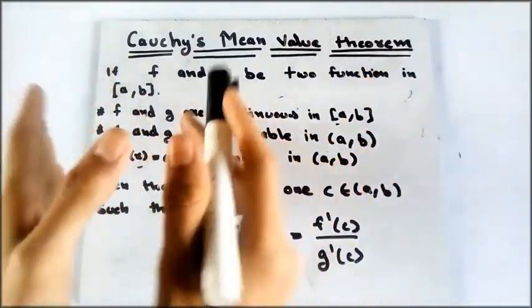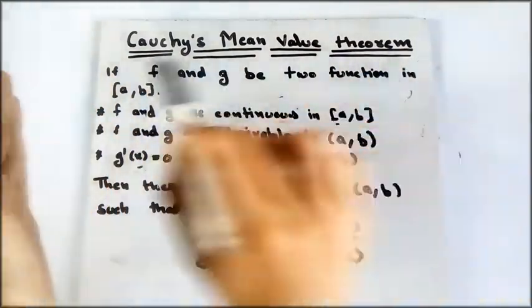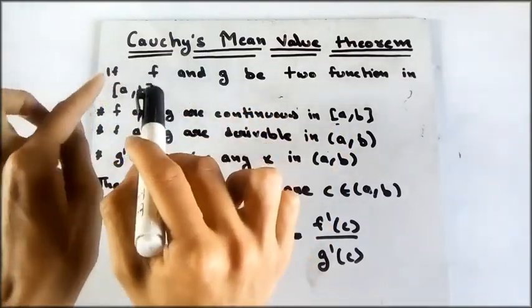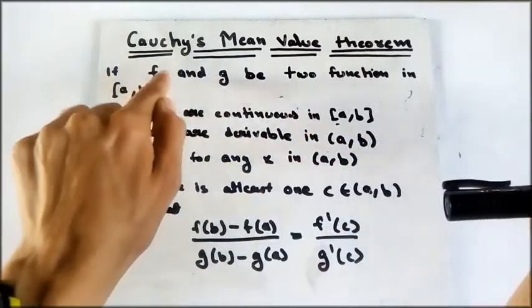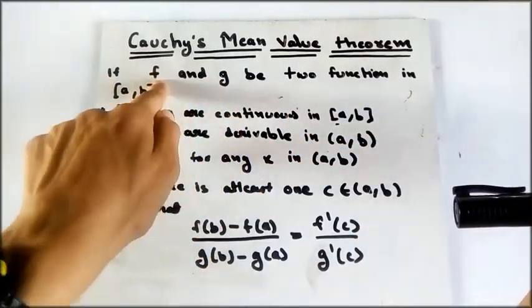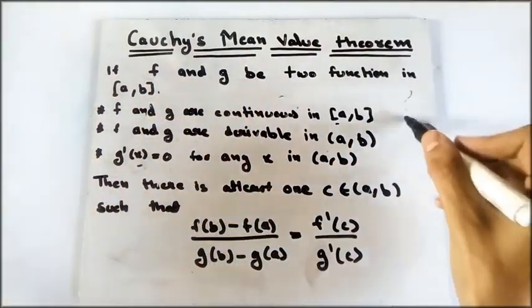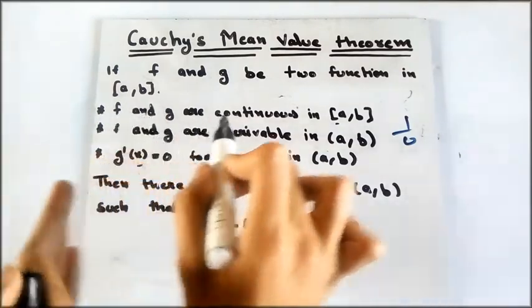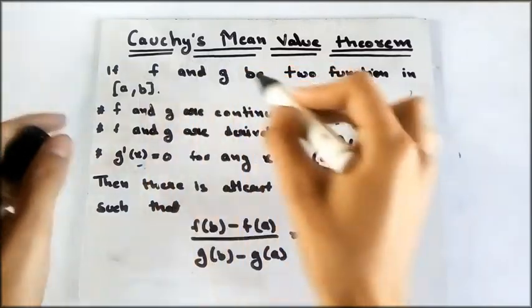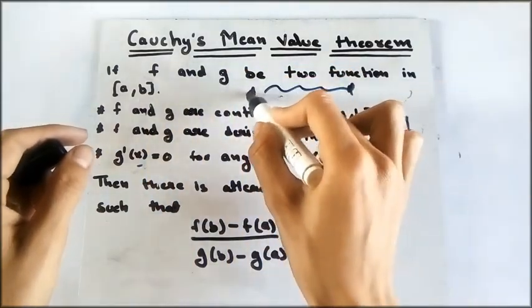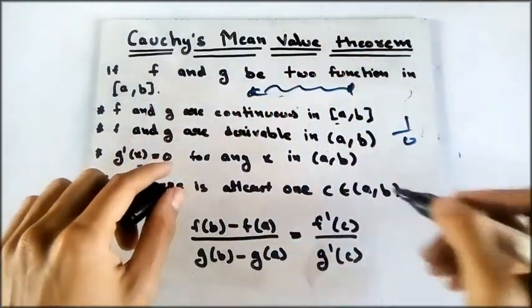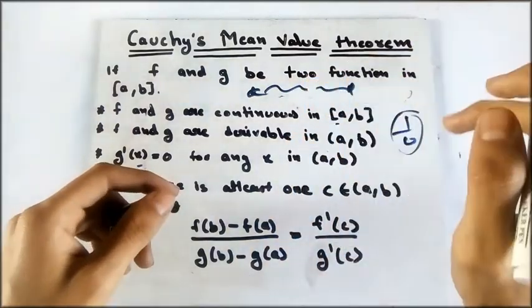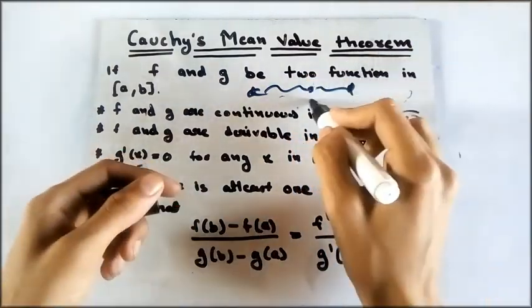It states that there are two functions f and g in [a,b], that means a and b are included. These square brackets mean a and b are included, that means there is an f(a), there is a g(a), there is an f(b) and there is a g(b). There are no indeterminate forms there. Now, it is saying that f and g are continuous in [a,b], that means they are continuous and do not vanish anywhere between a and b.